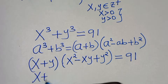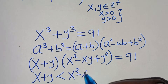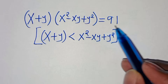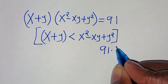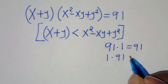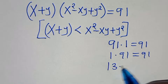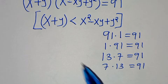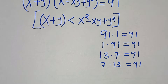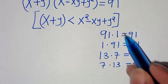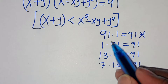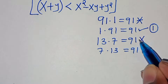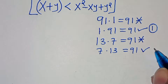We note that x + y is less than x² − xy + y². The factor pairs of 91 are: 91×1, 1×91, 13×7, and 7×13. Given the condition that x + y < x² − xy + y², the pair 91×1 is rejected since 91 > 1. The pair 1×91 is accepted (Case 1). The pair 13×7 is rejected since 13 > 7. The pair 7×13 is accepted (Case 2).